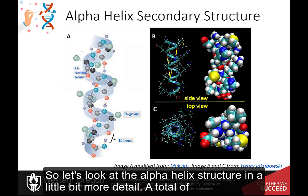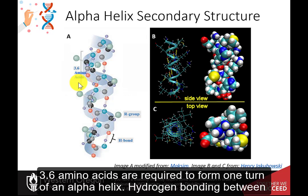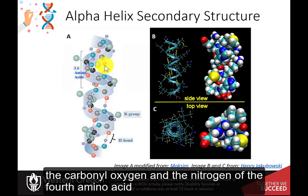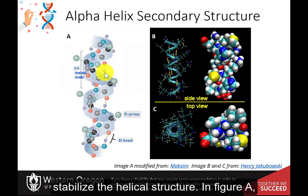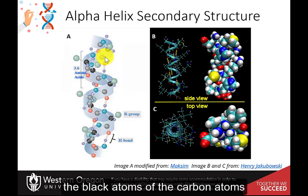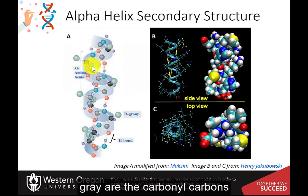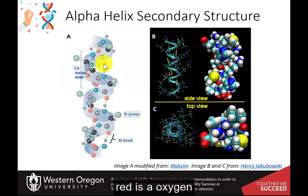Let's look at the alpha helix structure in more detail. A total of 3.6 amino acids are required to form one turn of an alpha helix. Hydrogen bonding between the carbonyl oxygen and the nitrogen of the fourth amino acid stabilize the helical structure. In figure A, the black atoms are the carbon atoms, grey are the carbonyl carbons, red is oxygen, and blue is nitrogen.